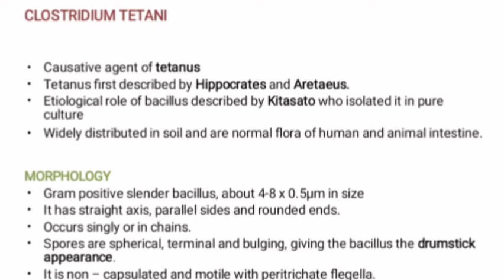Clostridium tetani is ubiquitous in nature — widely distributed in the environment, mainly in soil — and is a normal flora of humans and animals. Regarding morphology, Clostridium tetani are gram positive slender bacilli, 4 to 8 by 0.5 micrometers in size, that is 4 to 8 micrometers in length and 0.5 micrometers in breadth. The bacillus has a straight axis, parallel sides, and rounded ends.